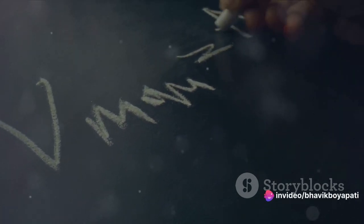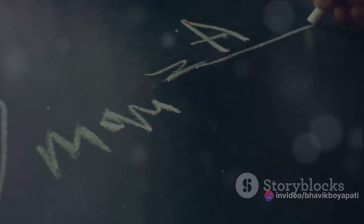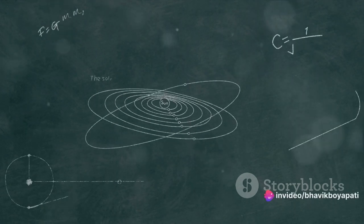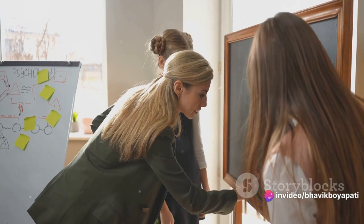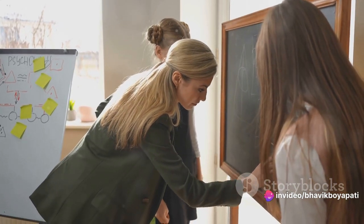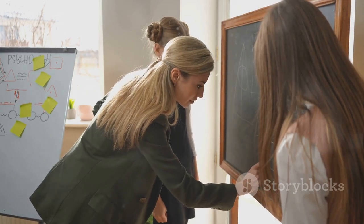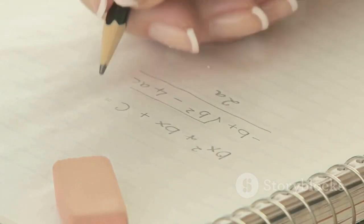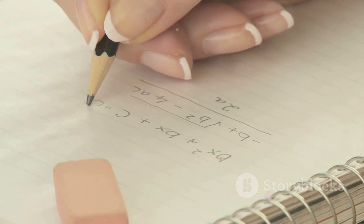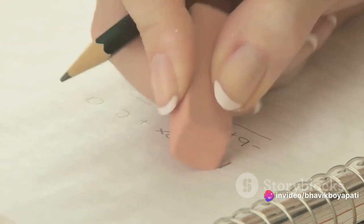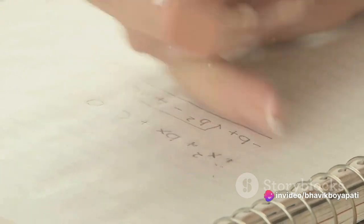Let's move on to the method of finding the missing number. Let's say we know that 30% of a number is 60. We can represent that as an equation: 30% of x equals 60. In mathematical terms, that's 0.30x equals 60. To solve for x, we need to isolate it. So we'll divide both sides of the equation by 0.30. That gives us x equals 60 divided by 0.30, which equals 200. So the original number was 200.